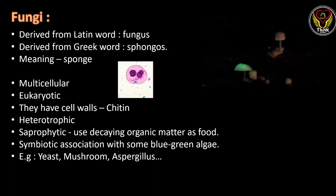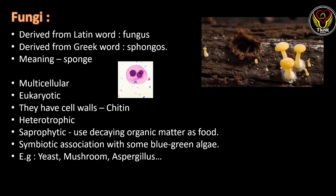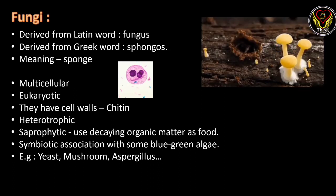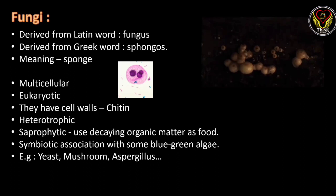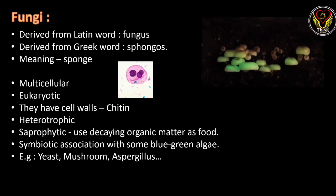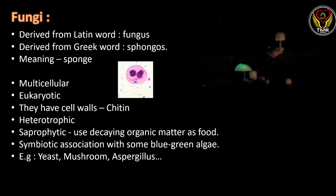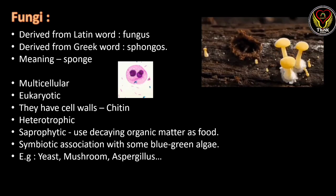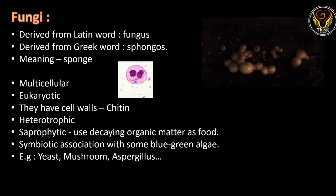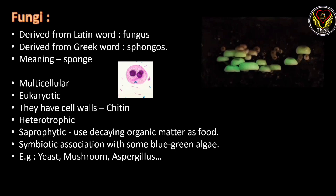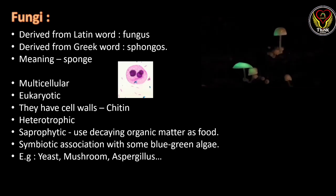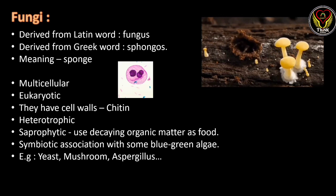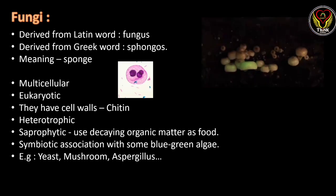The third kingdom is Fungi. It is derived from the Latin word 'fungus', with its origin from the Greek word 'sponges' meaning sponge. The cell type is multicellular and eukaryotic — so from unicellular we have developed into multicellular. An important feature is they have cell walls made up of chitin, whereas most cell walls are made up of cellulose.